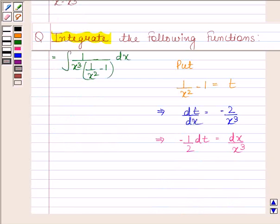Now we will substitute t in place of 1 by x square minus 1 and minus 1 by 2 dt in place of dx by x cube. This is equal to minus 1 by 2 into integral of dt by t.